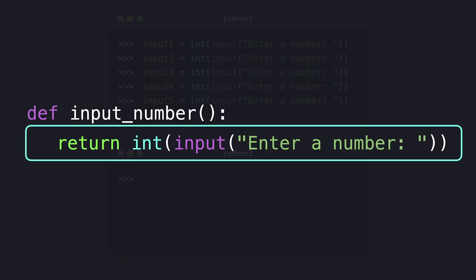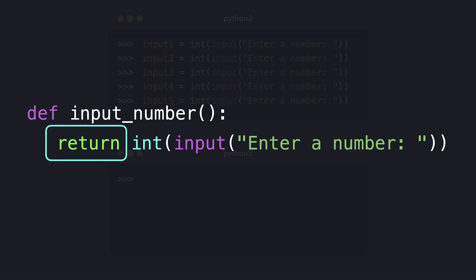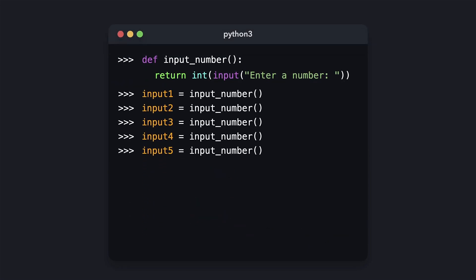The function prompts the user to enter a number using the input function, and automatically converts it to an integer using int. There is one new keyword here: 'return'. Although this keyword isn't strictly necessary, the return keyword tells Python that this function should not just execute a block of code — it should also return a value, in this case the number the user entered. Let's rewrite the repetitive code to use our 'input_number' function instead.